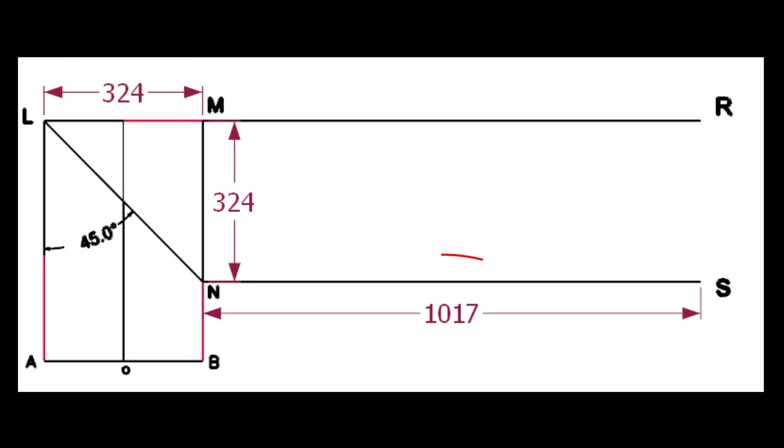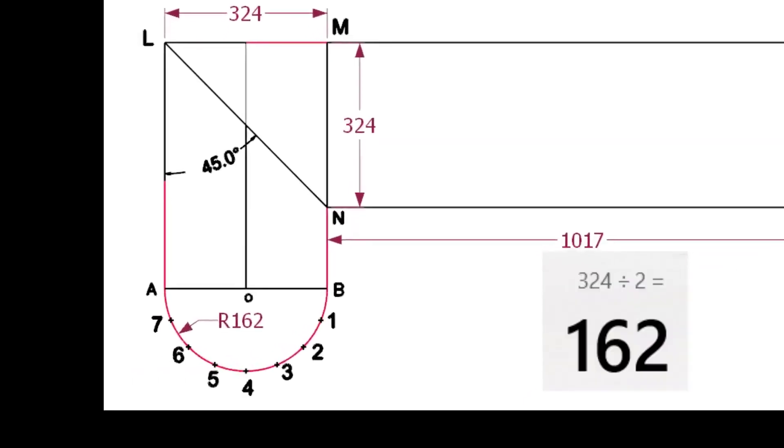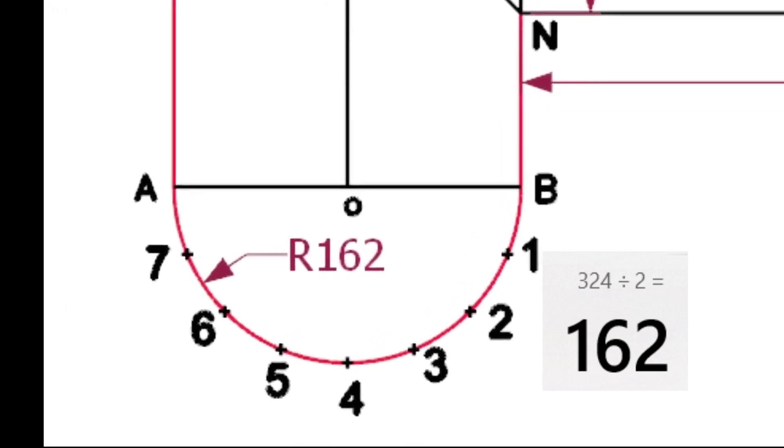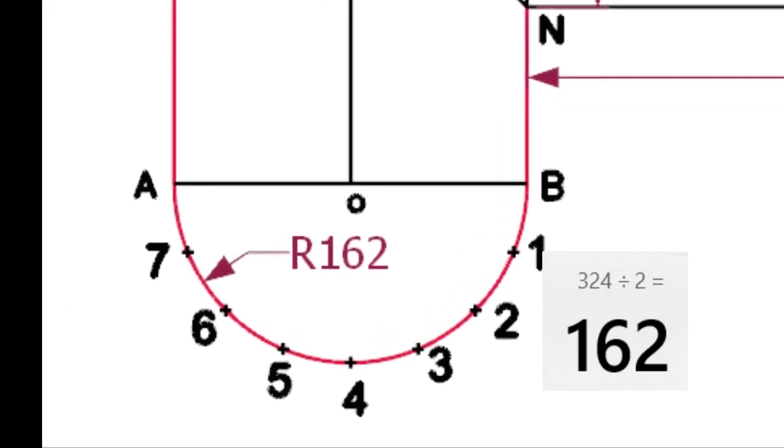We know the circumference of the pipe is 1017 millimeters. Draw the lines MR and NS. Draw a half circle centering O and divide the circumference into 8 equal parts.